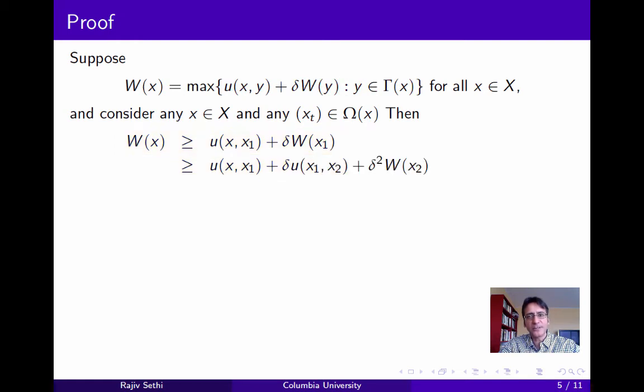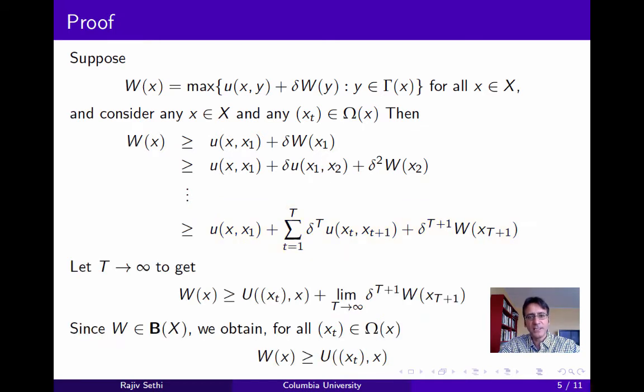Now we can apply the same reasoning to w of x1, and continue in this manner to get the expression shown on the slide. Now let t go to infinity, and you see that the first two terms in the expression go to the payoff associated with the path xt. And the last term goes to 0, because w is a bounded real function. And this means that for all feasible paths xt that start from the point x, w of x is greater than or equal to the payoff that one obtains by following xt.